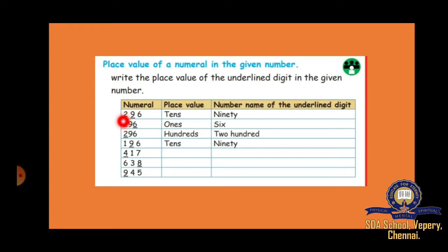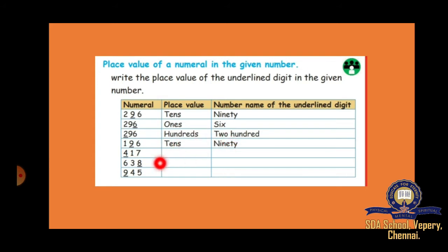In 296, the 2 is 200, the 9 is 90, and the 6 is 6. If the underlined number is 6, then 6 is in the ones place. For 2 it is 200 — hundreds place. For 9 it is 90 — tens place. For 4 it is 400 — hundreds place. For 8 it is ones place, so 8. For 9 it is 900 — hundreds place. Like this you have to write.